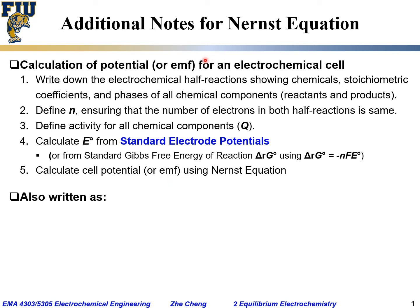Sometimes Nernst equation can be written in slightly different format, for example like this. E, the equilibrium cell potential would be E°, standard cell potential minus RT/nF ln Q. That is the original Nernst equation. But sometimes people do not like natural log of reaction quotient. They want to change from natural log to the log with base of 10.